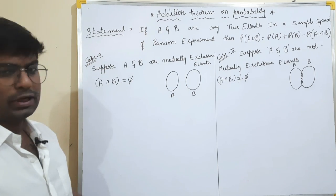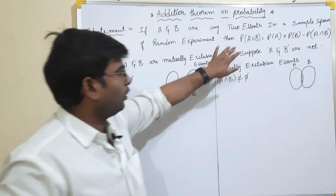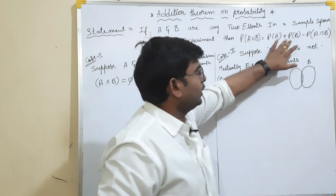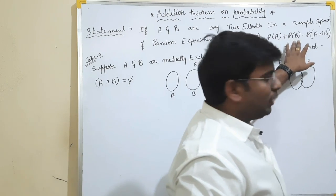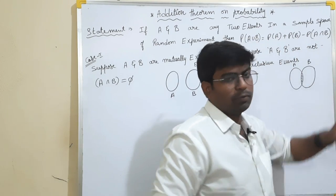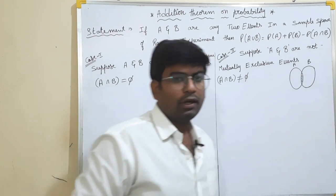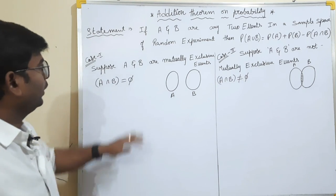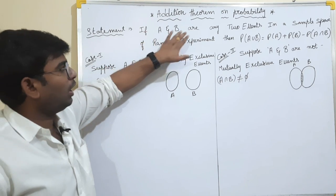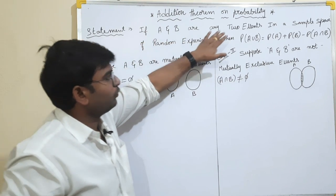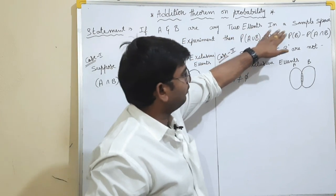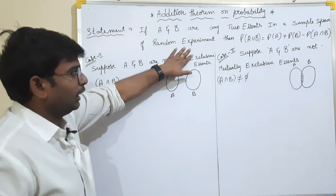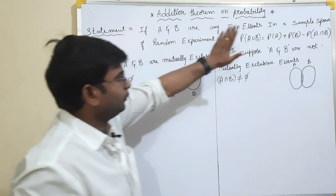So, this is my main proof: P of A union B equals P of A plus P of B minus P of A intersection B. The statement is: if A and B are any two events in a sample space of a random experiment, then we will prove it.